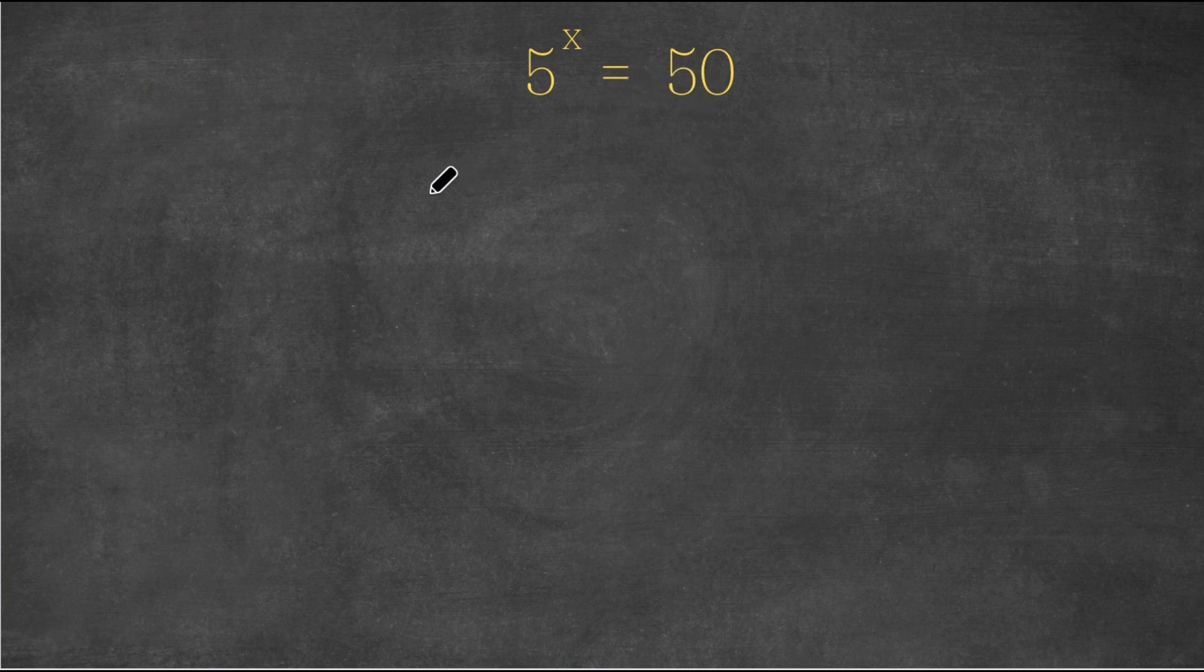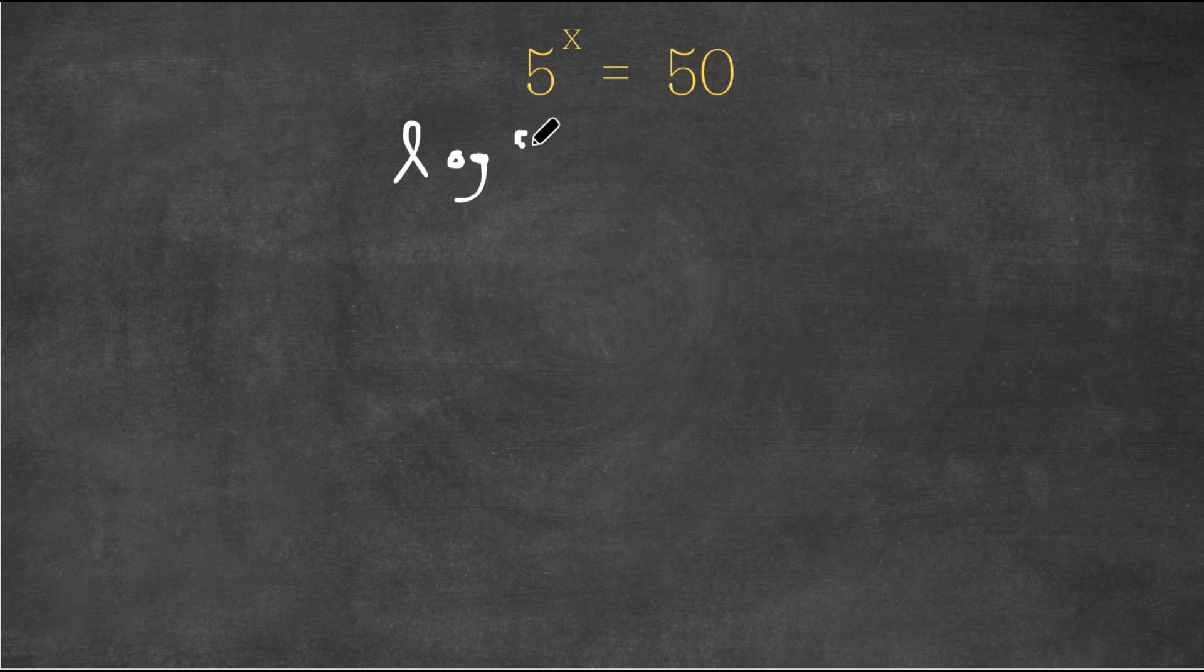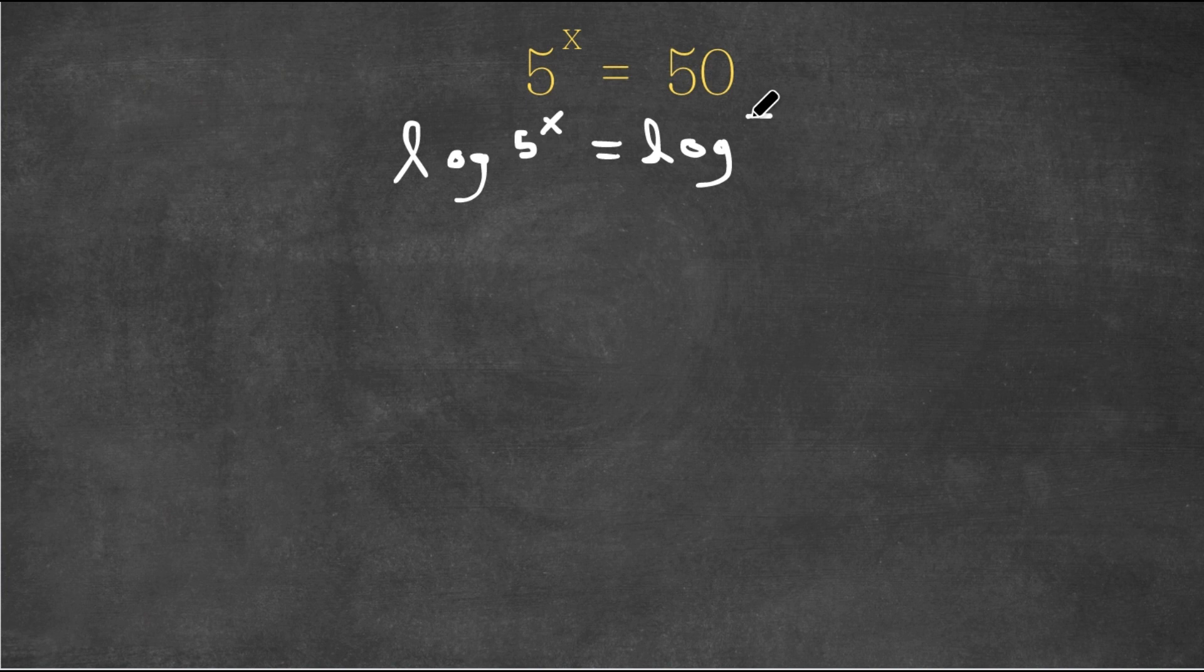So what I'm first going to do is I'm going to take the log on both sides. So now I have log 5 to the power of x is equal to log 50.